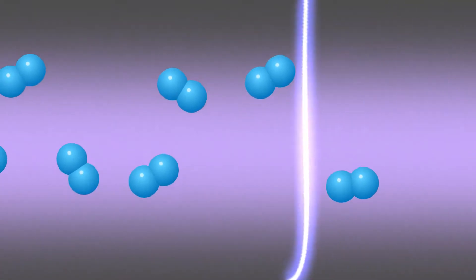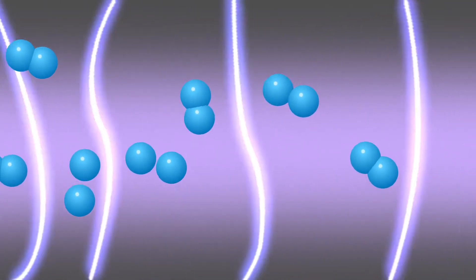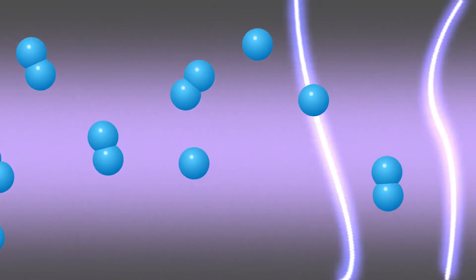The system takes in air from its surroundings and passes it through a corona discharge reaction chamber, a powerful, safe, continuous electrical spark that breaks apart the oxygen molecules into individual atoms.